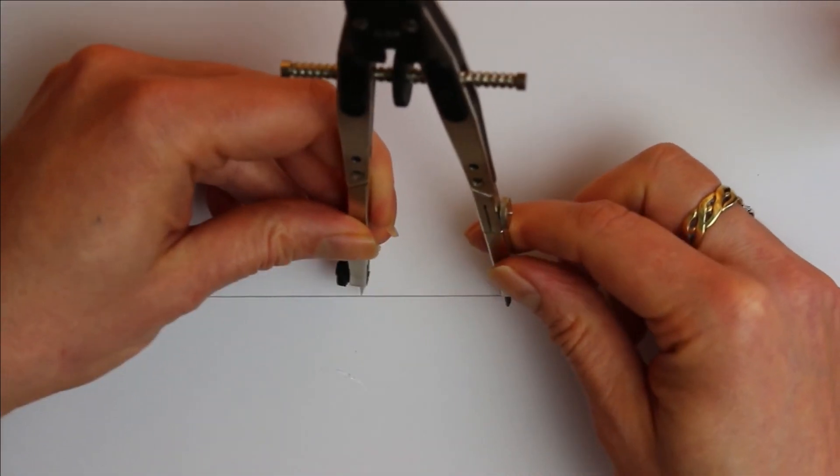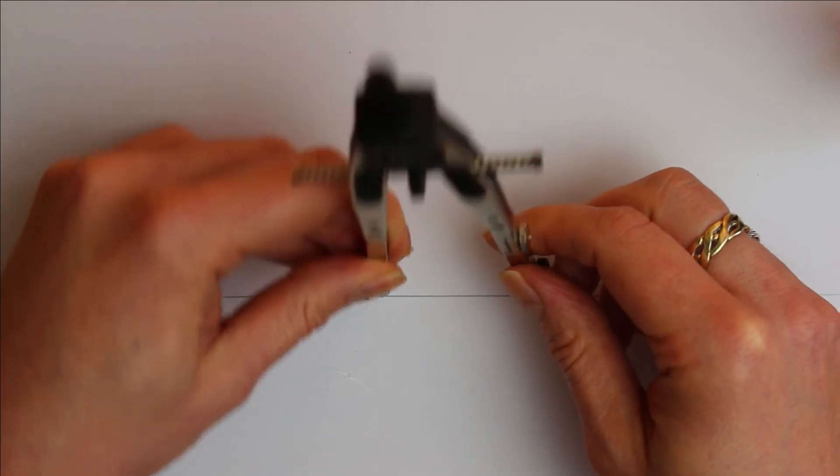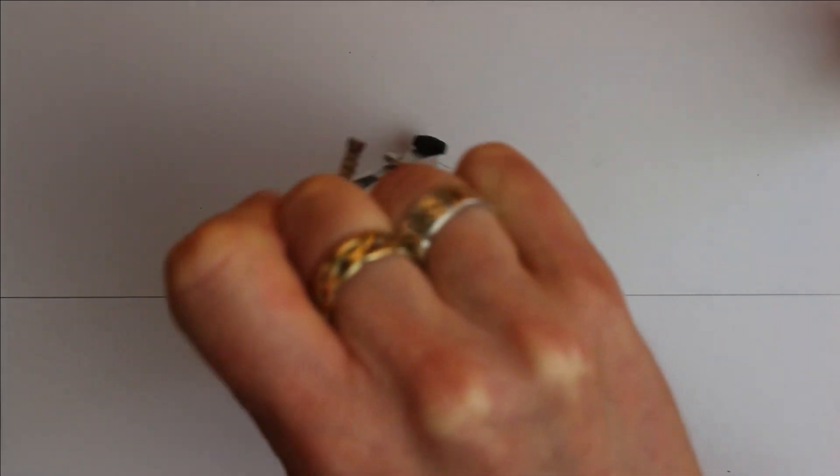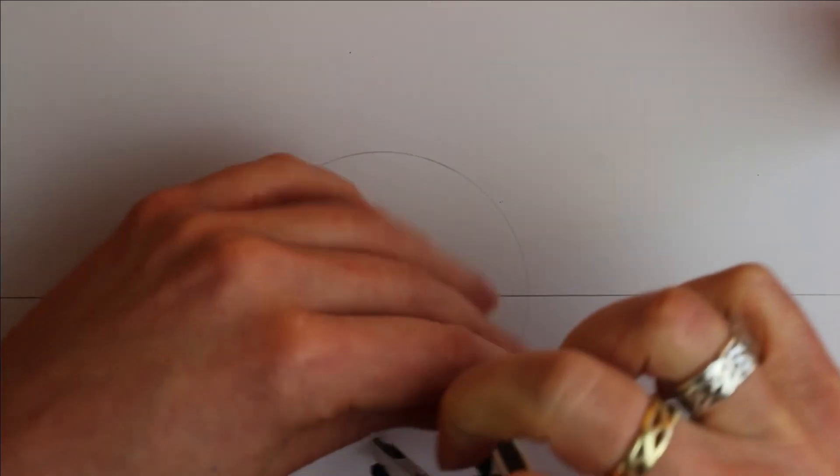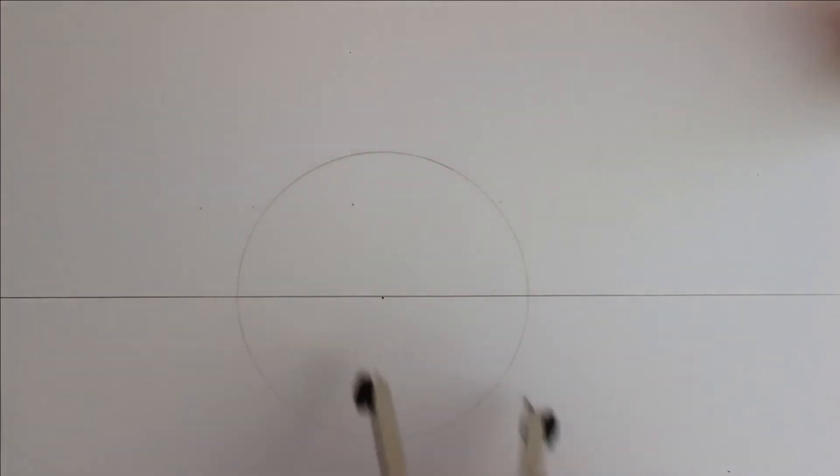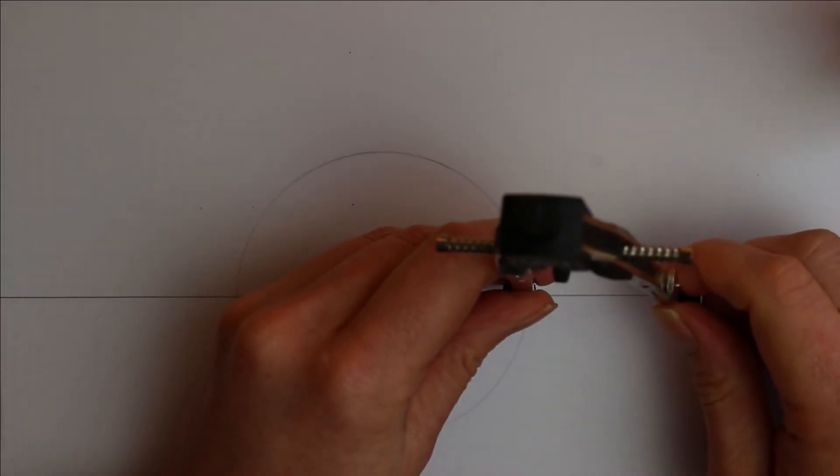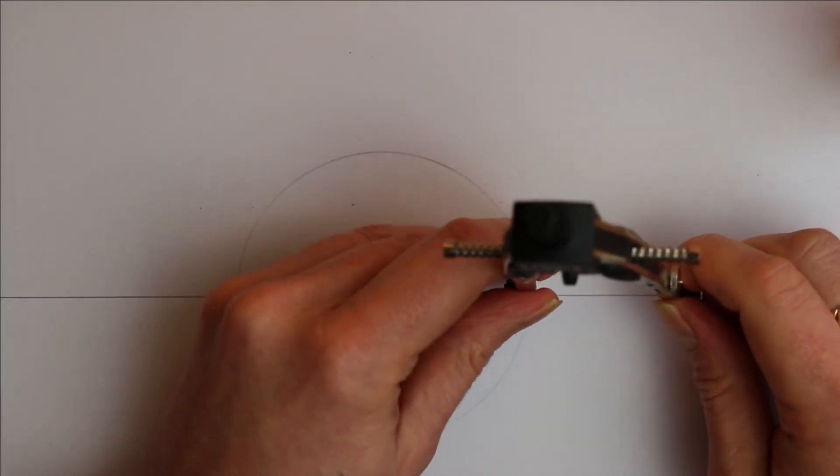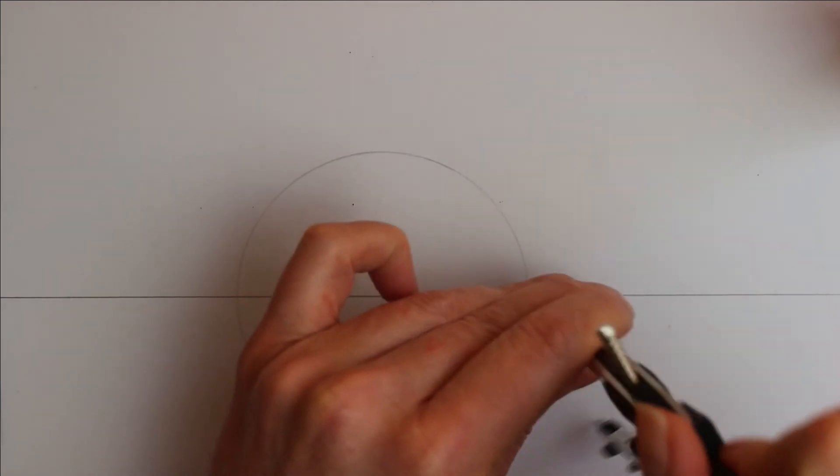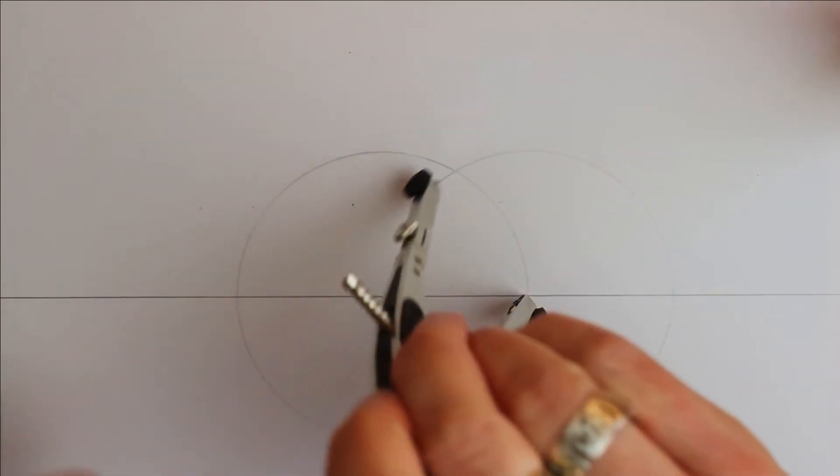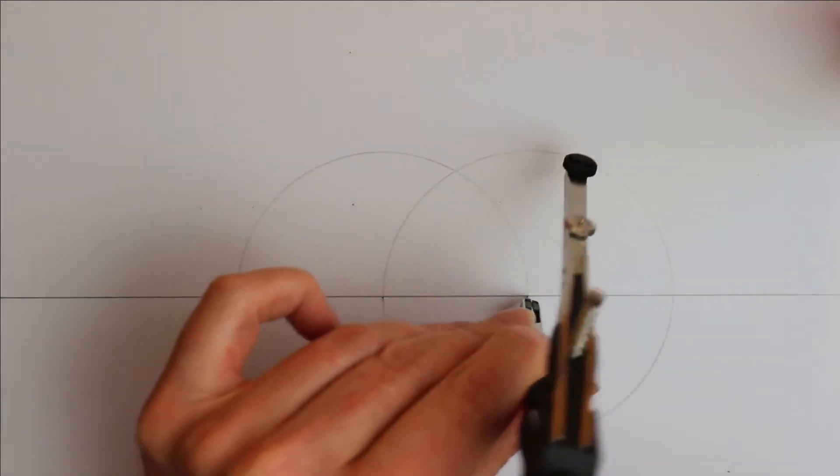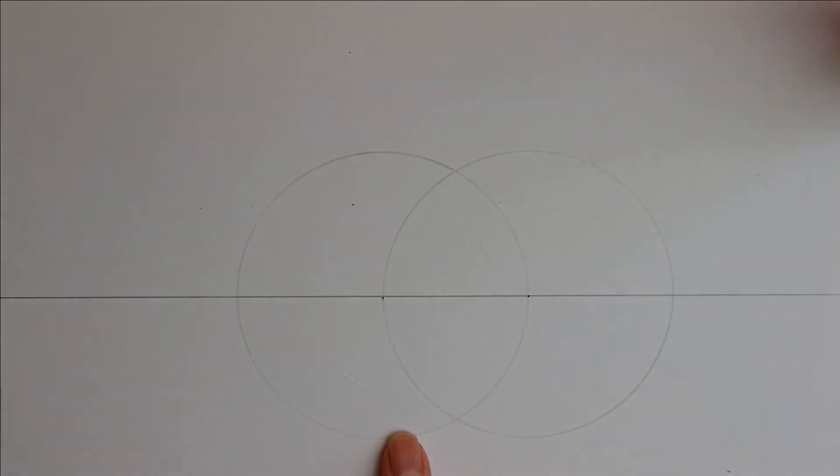Step two. In the center of the line place your compass and swing it round to create a central circle. The next step is to go to where the edge of your circle crosses the line and draw another overlapping circle.